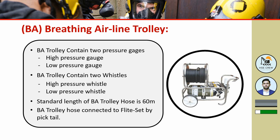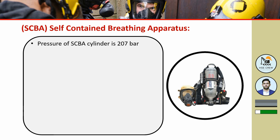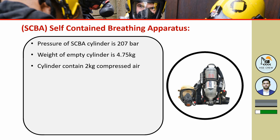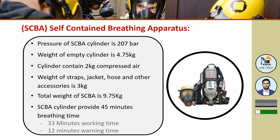The third type is SCBA — self-contained breathing apparatus — which is usually used for rescue purposes. Specifications: the pressure of an SCBA cylinder is 207 bar; weight of the empty cylinder is 4.75 kg; cylinder contains 2 kg of compressed air; weight of the strap, jacket, hose, and other accessories is 3 kg; so total weight of the SCBA is 9.75 kg. The SCBA cylinder provides 45 minutes of breathing time, divided into 33 minutes of working time and 12 minutes of warning time.